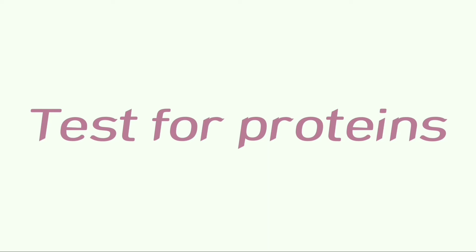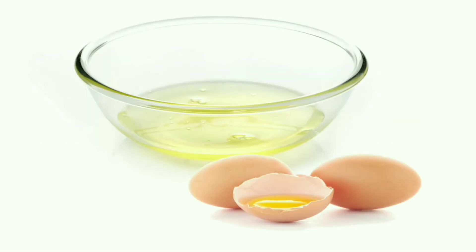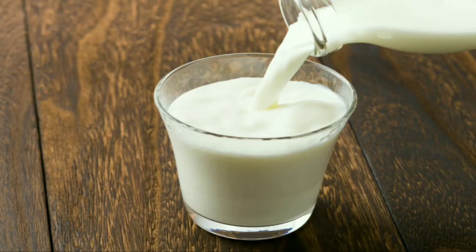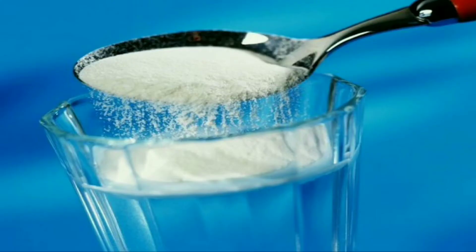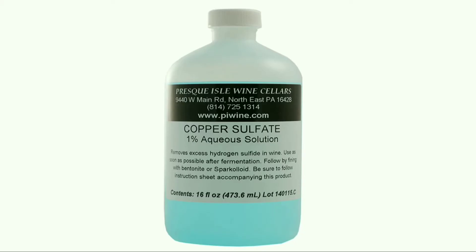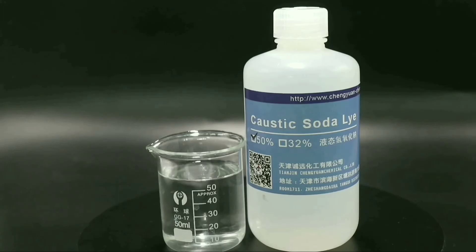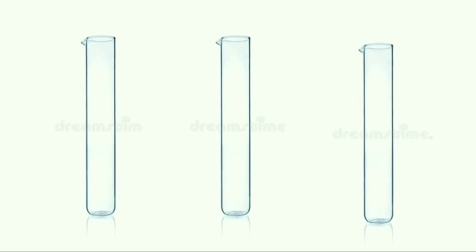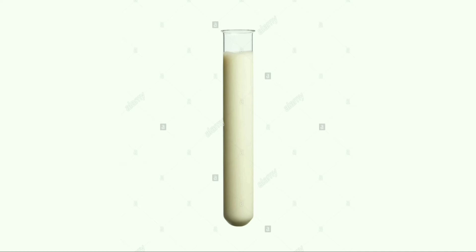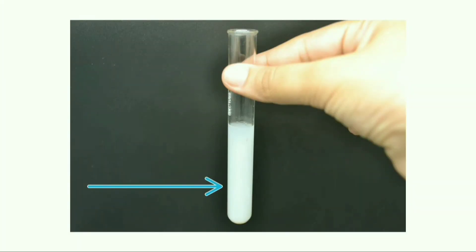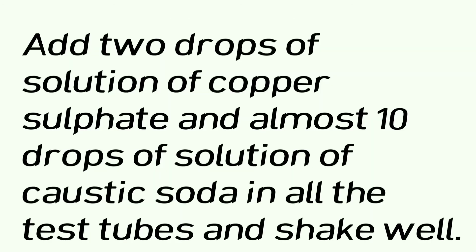Test for proteins. Take egg white, milk, salt water, copper sulphate solution, caustic soda and 3 test tubes. Fill the first test tube with some milk, the second test tube with salt water, and the last test tube with egg white. Add 2 drops of copper sulphate solution and almost 10 drops of caustic soda solution in all the test tubes and shake well.